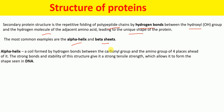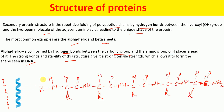What is alpha helix? Alpha helix is a coil that is formed by hydrogen bonds between the carboxyl group and the amino group four places ahead of it. The strong bonds and the stability of this structure give it tensile strength. This is the helical structure of alpha helix, and I'm going to discuss how this structure is formed.